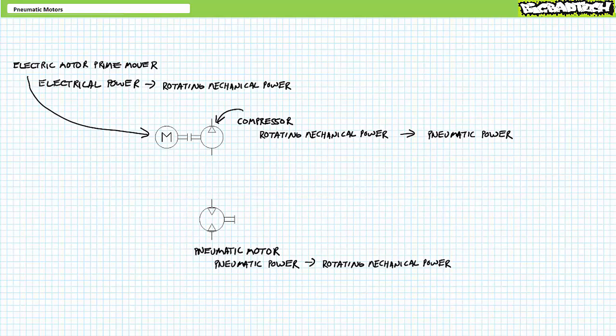Even the schematic symbol for an air motor tells us it is essentially the opposite of a compressor. Note the arrows of a pneumatic motor point inwards indicating a pneumatic motor consumes pneumatic power whereas the compressor provides it. Bi-directional pneumatic motors have two inward pointing arrows whereas unidirectional pneumatic motors have a single inward pointing arrow.